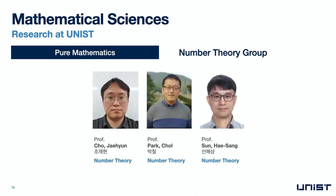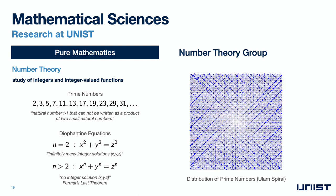Another group in pure mathematics is the number theory group consisting of professors Cho Jae-hyun, Park Cheol, and Sun Haesang, all working in number theory. Number theory is the study of integer numbers and integer-valued functions in mathematics. You may have heard about prime numbers — natural numbers that cannot be written as products of two smaller natural numbers. Studying such special numbers is part of the research in number theory. Also, researchers study integer solutions to special equations such as so-called Diophantine equations. You all know that one can find integer solutions to a quadratic equation, but if the degree of the equation is higher than two, it is known that one can no longer find integer solutions — this is also known as Fermat's last theorem.